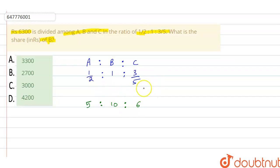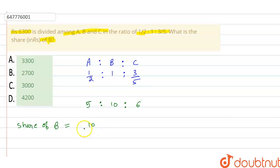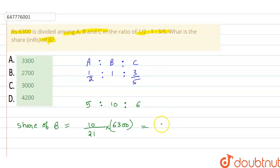The sum of the ratio is 5 + 10 + 6 = 21, and the total amount is 6300. So the share of B will be equal to 10 divided by 21, multiplied by 6300, which equals 3000. So the right answer is option C. Thank you.